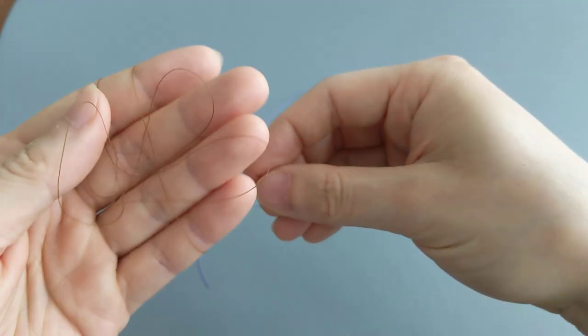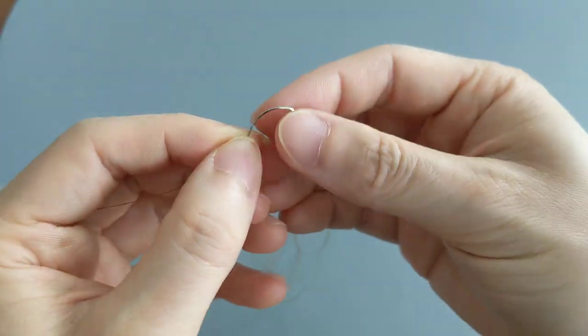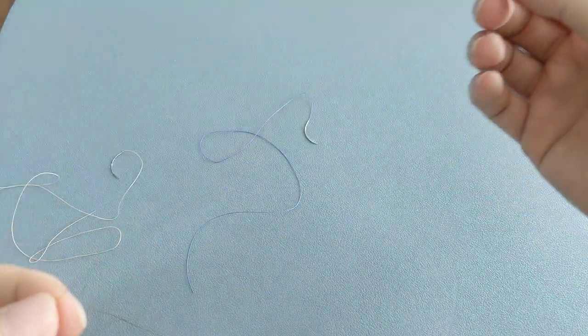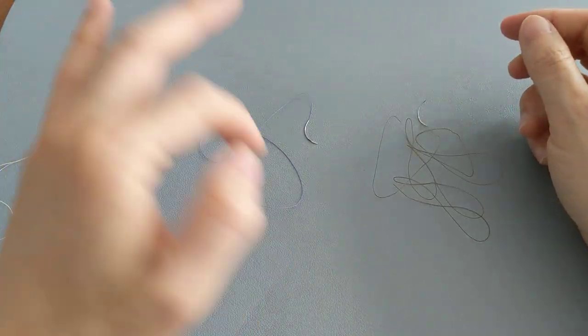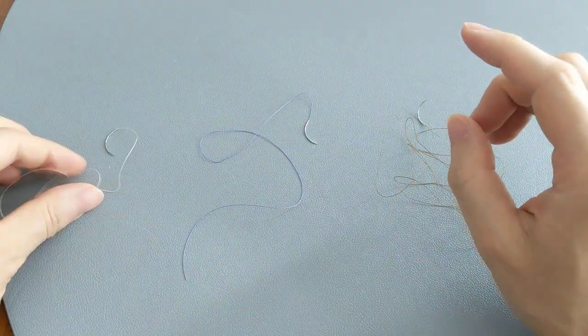But appearance-wise, they all kind of look fairly similar to one another. They all have the needle followed by a long thread, and basically these threads could be different colors, although all of them technically can come undyed like this one.